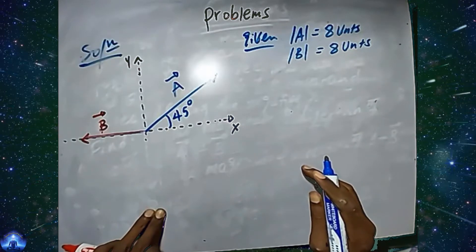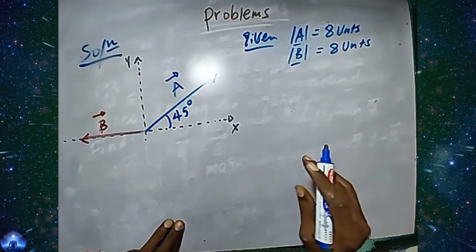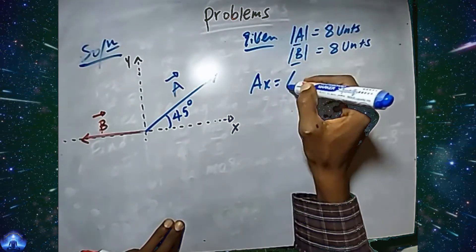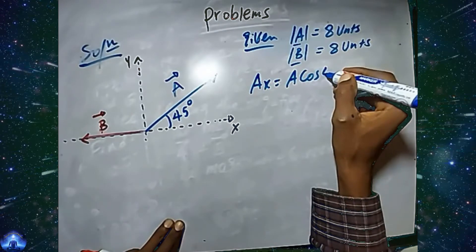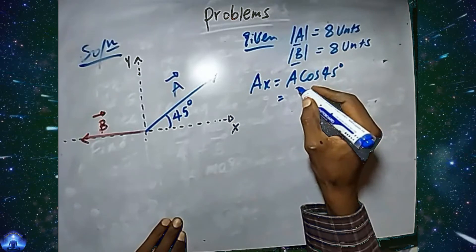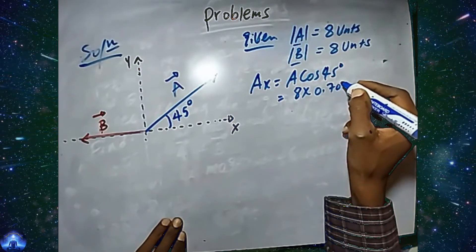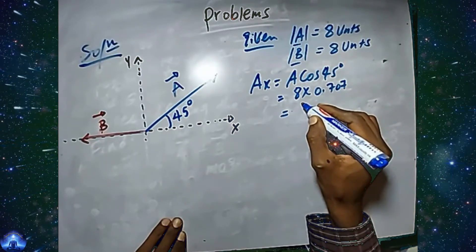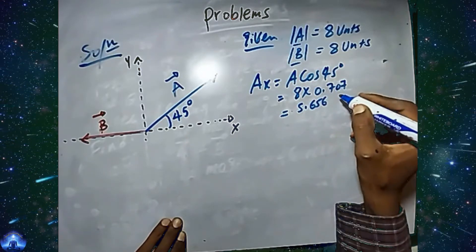The components of A are given by: Ax equals A times cos of 45 degrees, which equals 8 times 0.707, and this equals 5.656 units.